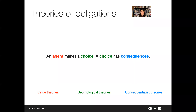At the end, we have virtue theories left to consider as a type of moral theories. Virtue theories stipulate that a good choice is a choice that is done by a good person — it is right if a right person does it. This seems a little abstract, at least to someone who is not from moral philosophy.